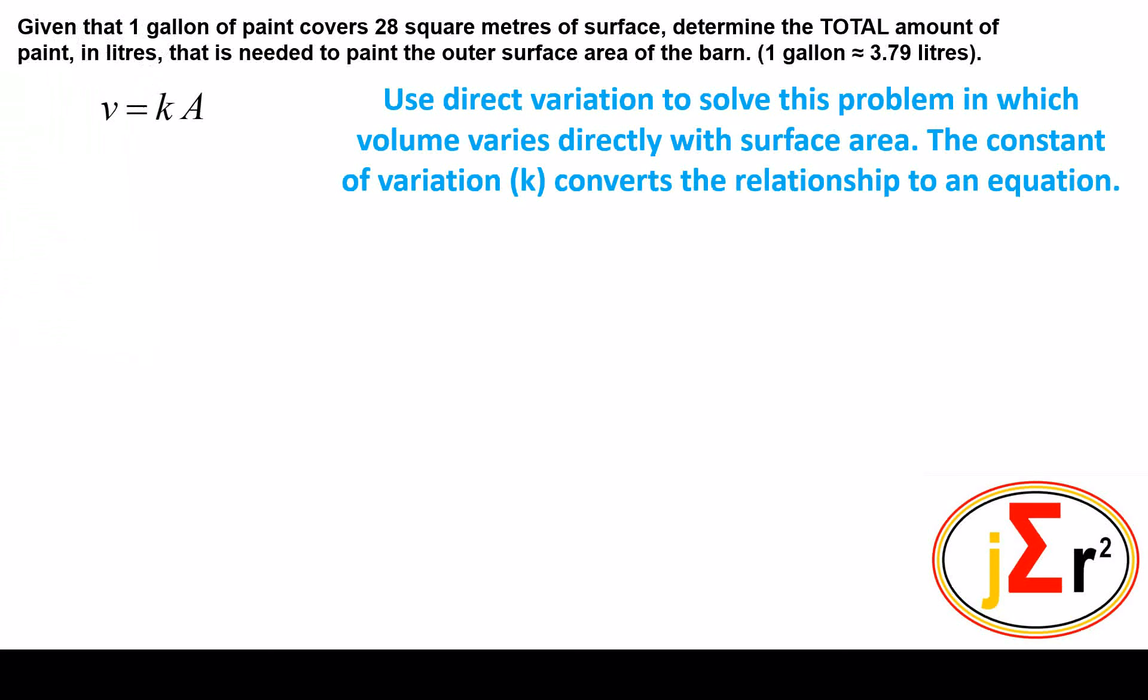V is directly proportional to A, or V varies directly as A. However, for the relationship between V and A to be an equation, we have to include a constant of variation, also called a constant of proportionality, k. V varies directly with A, but in order for us to have an equation relating V and A, we need this constant of proportionality.